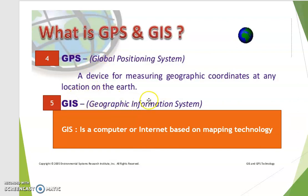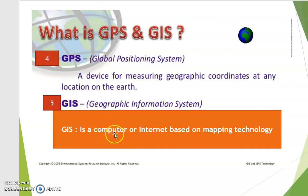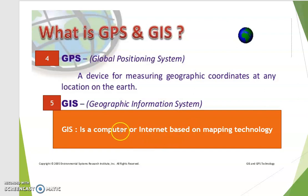GIS stands for Geographic Information System. Geographers use GIS to collect data from places and locations. This helps them provide good information using computers — all the data collected from people and places is entered into a computer and the information becomes available on a map. Unlike physical maps, GIS allows people to use online maps and access information digitally.